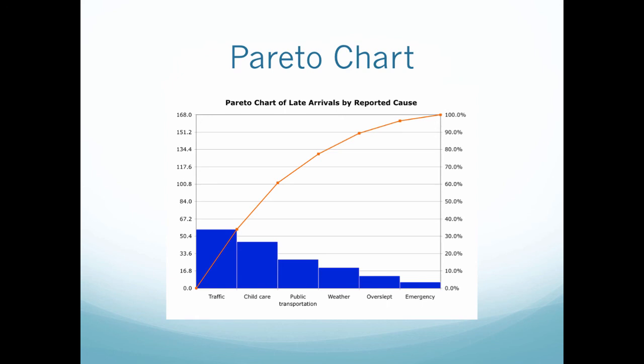Because the values of the statistical variables are placed in order of frequency, the graph clearly reveals which factors have the greatest impact and where attention is likely to yield the greatest benefit. In this case, we could look at this and say most of our employees were late because of traffic today, so maybe we're a little lenient because it wasn't an individual case.